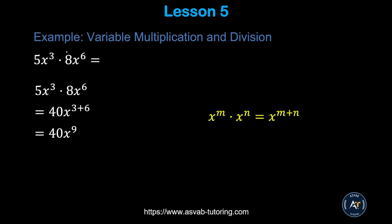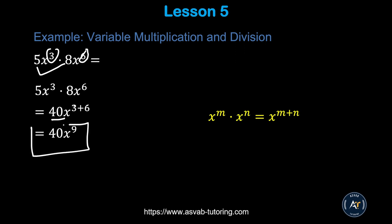The first thing we'll learn is how to multiply variables. Learn this concept and try a few times to make sure that you fully understand. If you multiply a variable, the first thing you have to do is add the exponents. So here 5 and 8 — you multiply 5 times 8 to get 40, and you add the exponents together: 3 plus 6 gives you 9. So the answer is 40x to the 9th power.